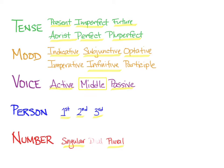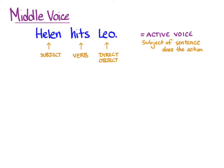So what then is the middle voice? Let's talk about it in English first. Remember our example of the active voice: Helen hits Leo. The subject is Helen, the verb is hits, the direct object is Leo. This is in the active voice because the grammatical subject of the sentence, Helen, is doing the action of the verb.